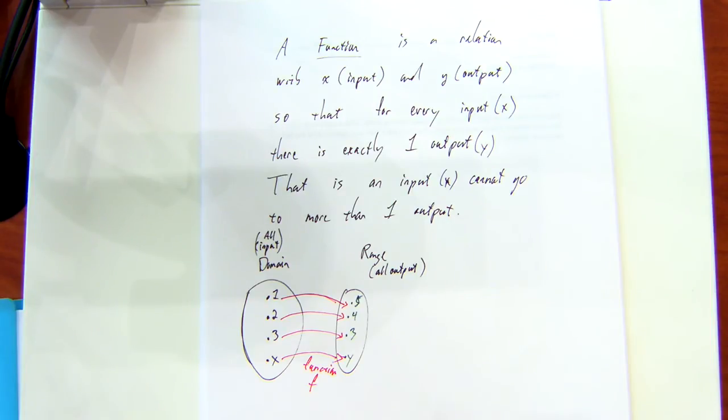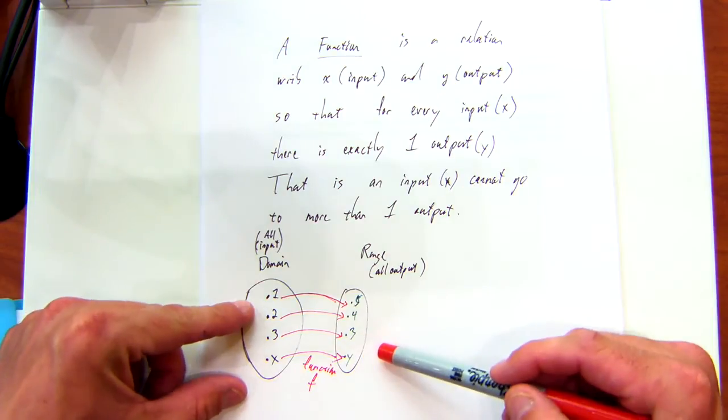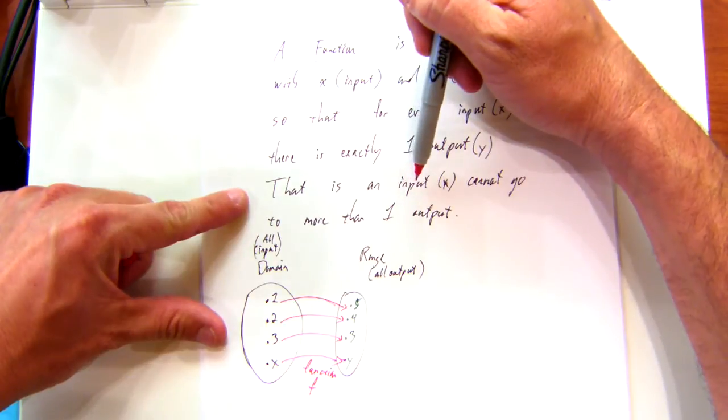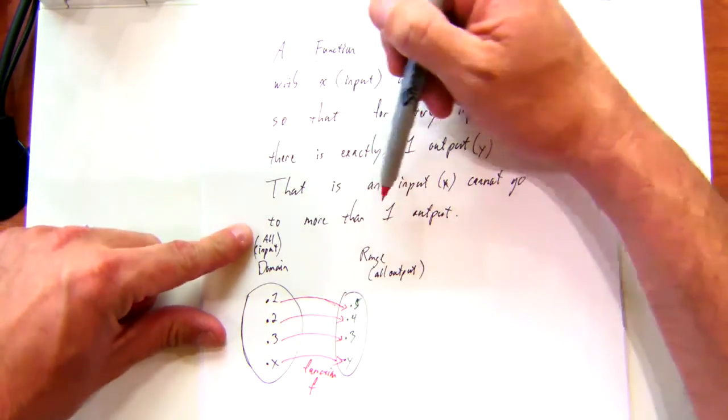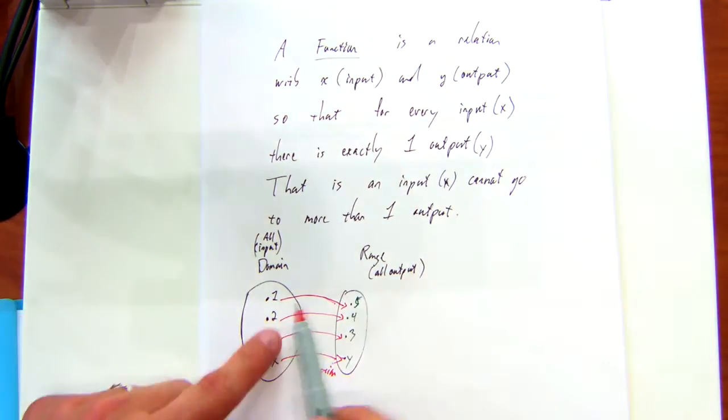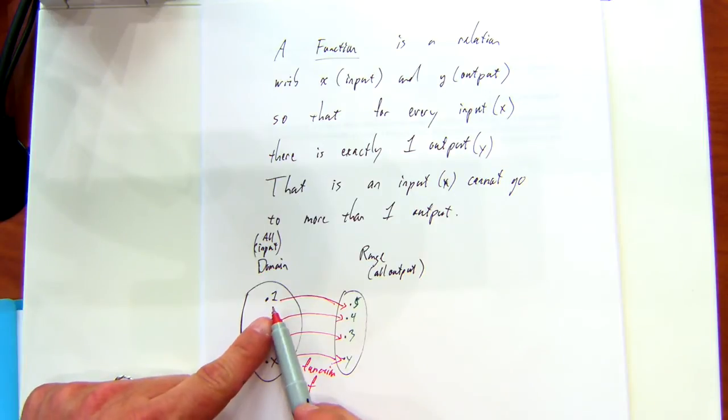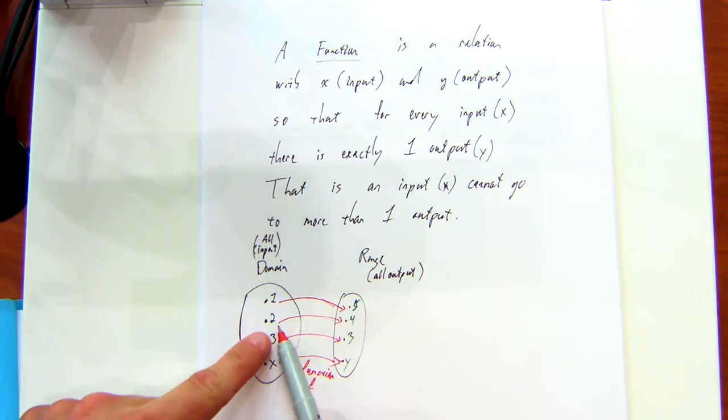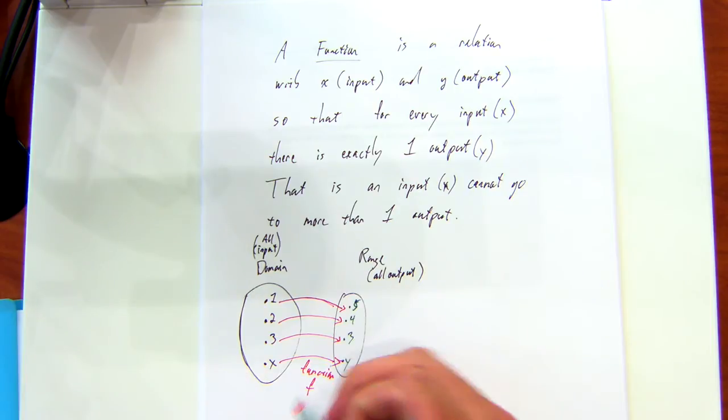Now, does this diagram satisfy the fact that for every input, it does not go to more than one output? So if I look at this input as one, and I follow the arrow, does it only go to one number? Yes. Is that true for every number? Yes. So this is a function.